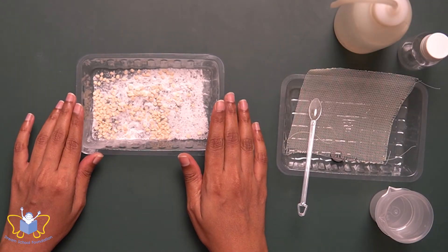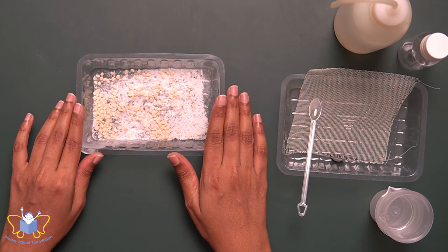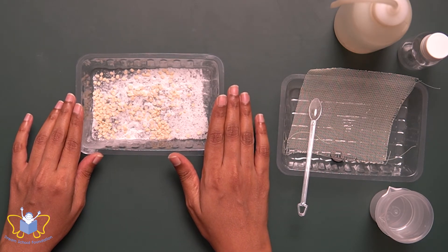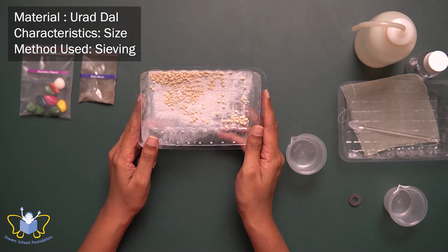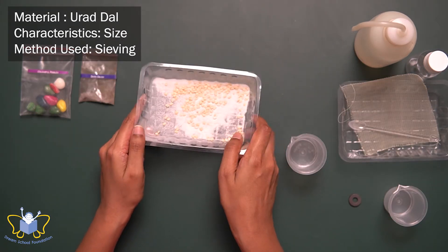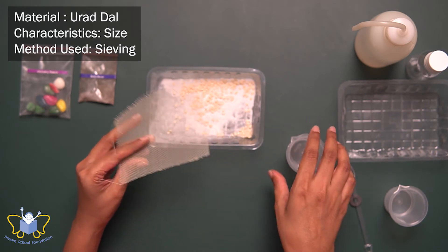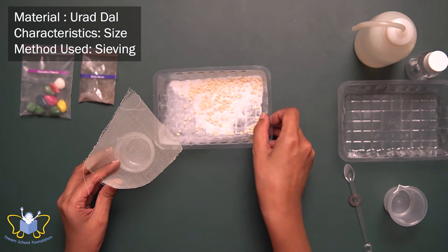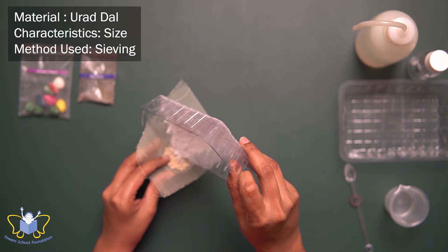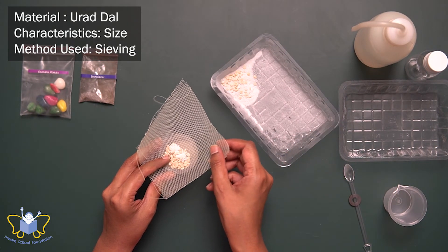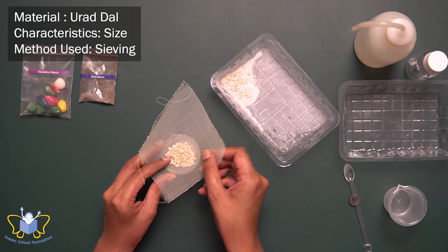What do I separate next? If we consider the size itself, you can see that the urad dal is bigger than the other components, right? But then, is it as easy as separating a colorful pebble? Using handpicking, I could separate the pebbles. But what about the urad dal? Now that I have gotten rid of iron crush, maybe I can use a sieve to separate the urad dal. As you can see, the sieve is big enough for other components, whereas it is still small enough to hold on to the urad dal.